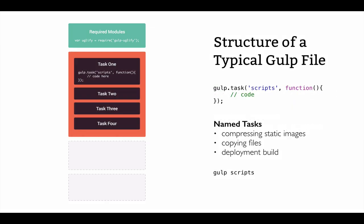The next three sections all have to do with various kinds of tasks. The main bulk of the Gulp file is basically set up with tasks that you name yourself — we'll call them named tasks. These could be anything from compressing static images to copying files to creating your deployment build. In this case we've set up four different tasks; one of which we called 'scripts,' and within that scripts task we would uglify, concatenate, and then rename files to the extension .min.js.